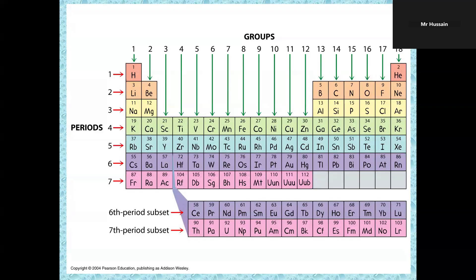Look at this picture. You see green arrows going downward? Count them, they are 18. The red arrows moving towards right are called periods. You see at the bottom there are two rows, one labeled as sixth period subset, second one seventh period subset.